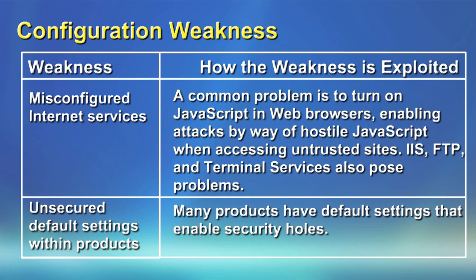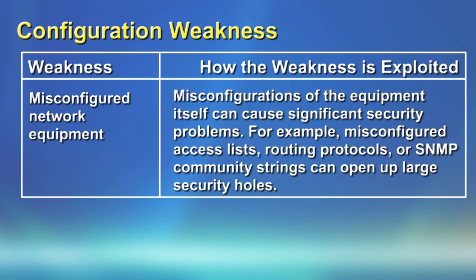Unsecure default settings are a major issue — we leave products on default settings and don't change passwords. For example, if I know a device is a Cisco box, I know that Cisco default passwords are always 'cisco', so I can easily attack it without much effort. Misconfigured network equipment is another concern: a wrong access list can allow unauthorized people to access the network without the administrator being aware. Wrong routing protocols can expose route and network information to people who shouldn't have it, and a wrong management protocol can expose usernames and passwords when managing equipment remotely.